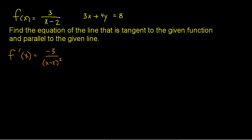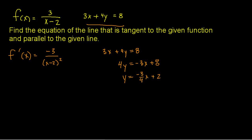If I'm going to be parallel to this given line, I need the same slope. So I have to solve for y. I'm going to subtract the 3x to the other side and divide everything by 4, and I get y equals negative 3 fourths x plus 2. That tells me that the slope is negative 3 fourths.